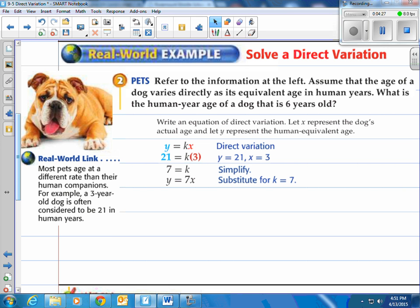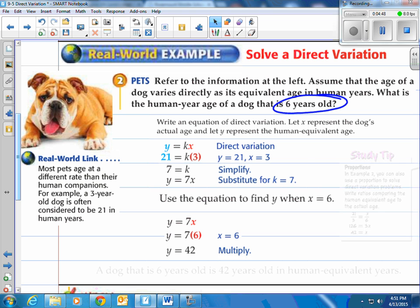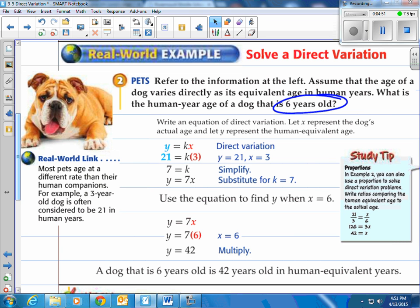So y equals 7x would be the equation we'd be using. So let's use that equation and find what y would be when x is six years old. That's what they're looking for here. So what about a six year old dog? How old would they be? Well take the y equals 7x. Again 7 is our constant of variation. And then take the seven times the six and you get 42. So we would say that a dog that is six years old is 42 years old in human equivalent years. Many of you have heard that. It's a seven, a one-year-old is seven times that. Or a two-year-old dog is seven times that or 14 years old.